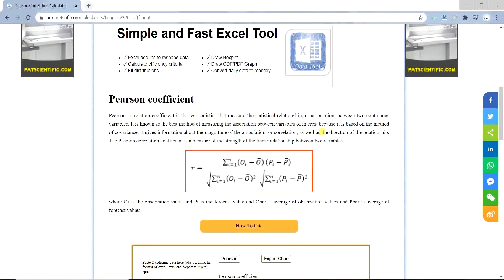So the Pearson Coefficient, as you can see here, is a test which can tell you what is the statistical relationship or association between two continuous variables. You can see the formula out there so I don't waste the time.